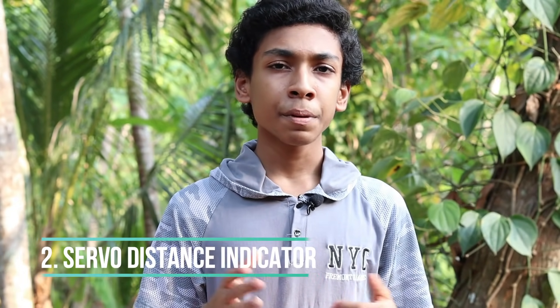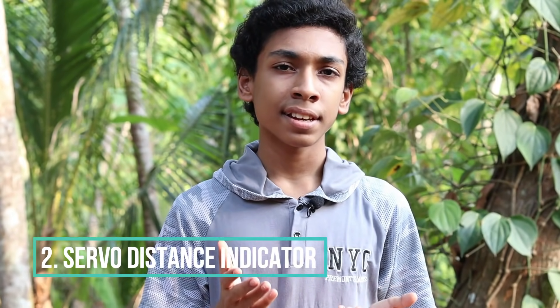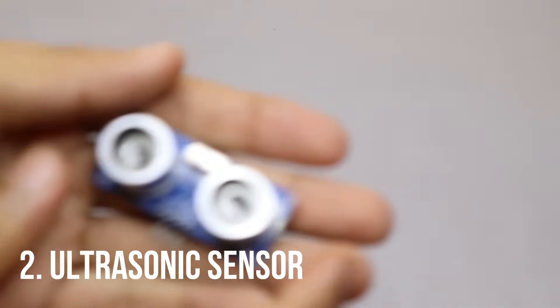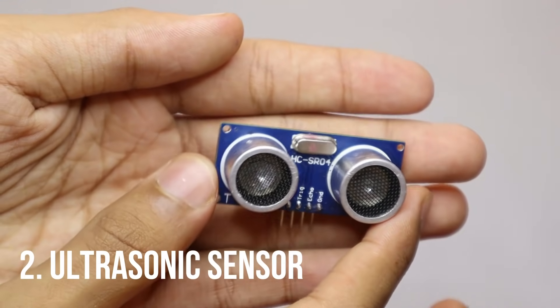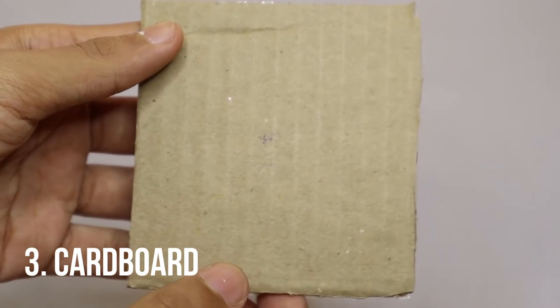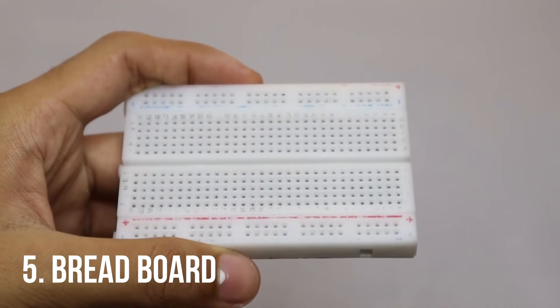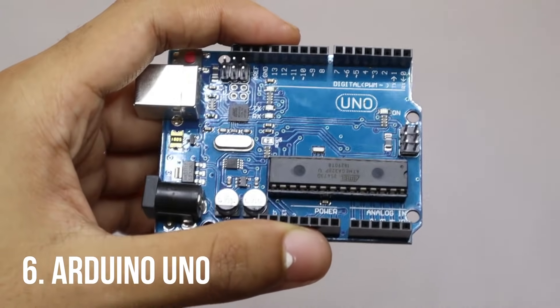Our second experiment is going to be a servo distance indicator. To make the servo distance indicator you will need a micro servo, an ultrasonic sensor, a piece of cardboard, some jumper wires, a breadboard, and an Arduino Uno.